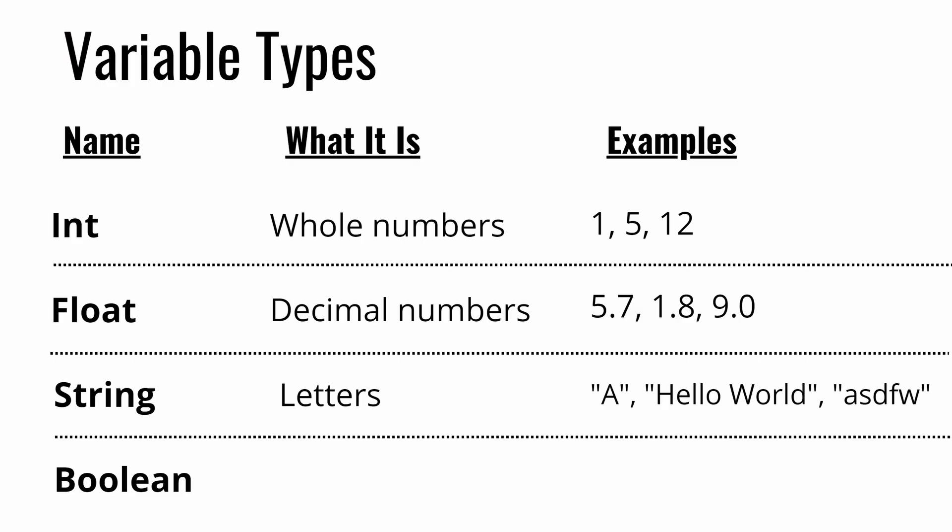The last type of basic variable that's super common is called a Boolean. And if you're new to programming, you've probably never heard this term before. A Boolean literally just means true or false. Booleans are super simple, but yet they play a huge part of Python and computer science in general. We'll talk about them today, but we'll dive deeper into Booleans in the next episode when we cover conditional statements.